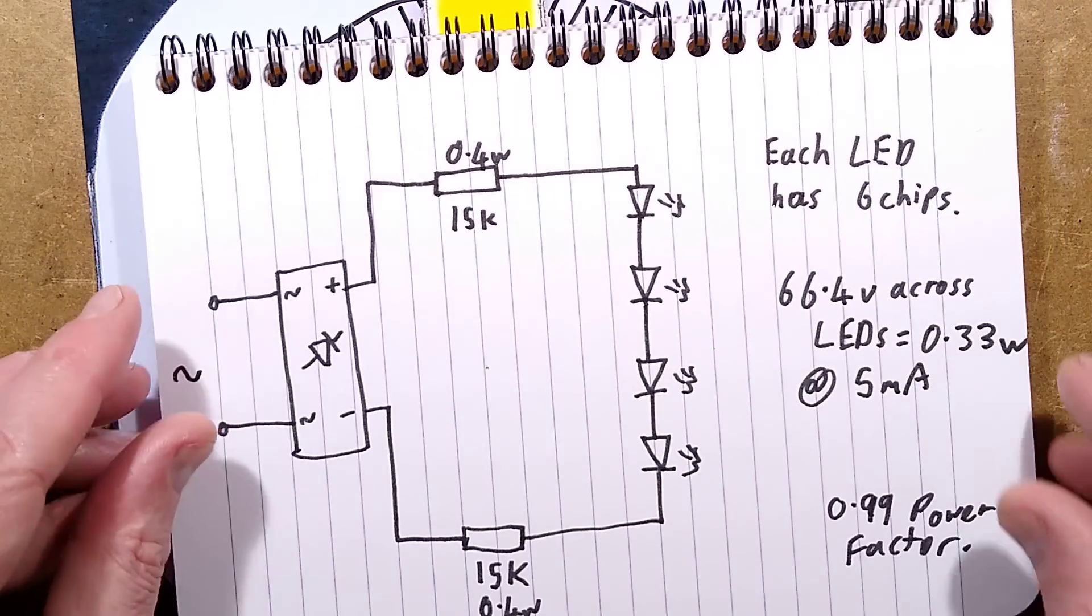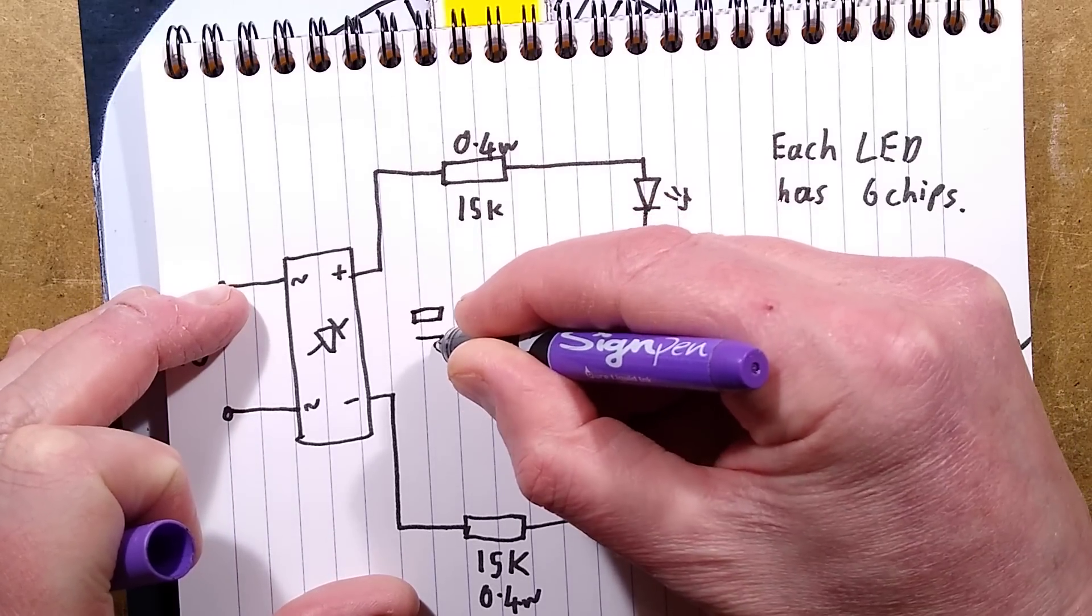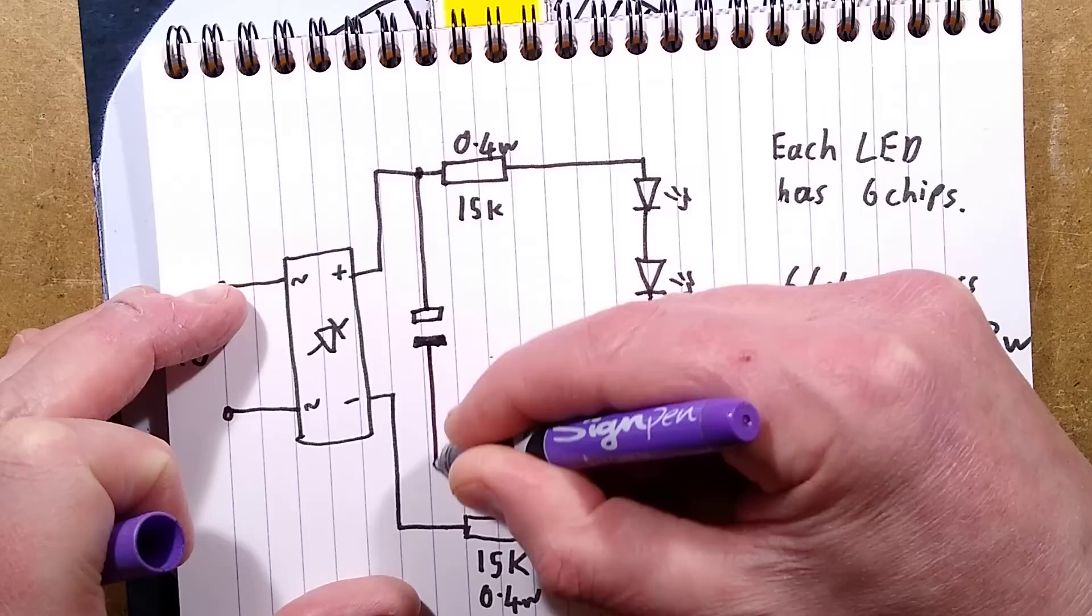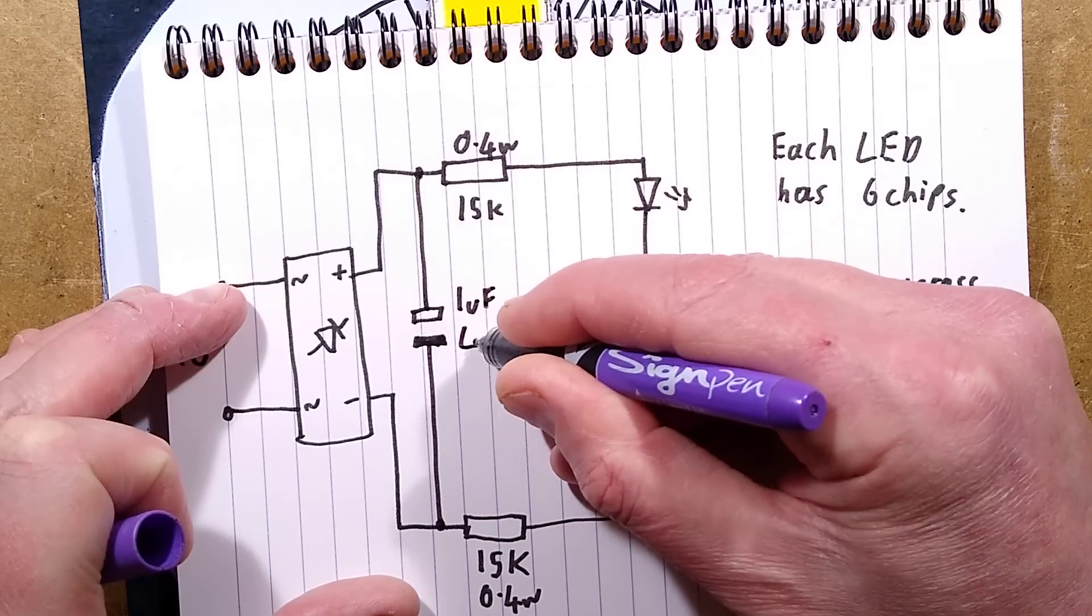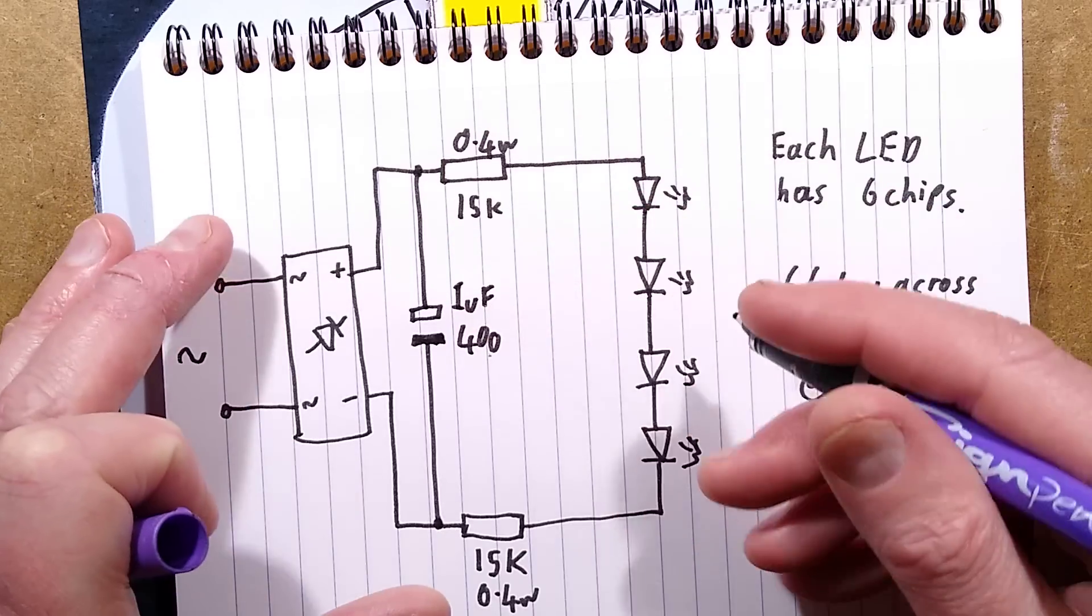The other thing they could have done is they could have added a very small electrolytic capacitor across the output of the bridge rectifier. Something even like one microfarad 400 volt would have been all that it would have taken at this current to smooth that and get rid of the ripple.